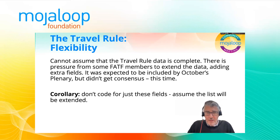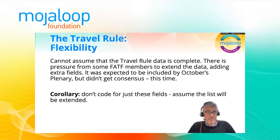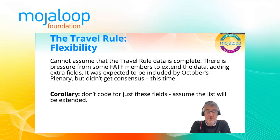We cannot assume that the travel rule data list is complete. We know that it's been extended in the past and we know that there's currently pressure from some FATF members to extend the data. Somebody told me it was expected to be addressed during the recent FATF plenary, but the request to extend the travel rule data didn't get consensus this time — though it may well happen next time. So the corollary of this is: if we're coding for the travel rule data, don't code for just the fields that are already listed. Assume the list will grow over time.